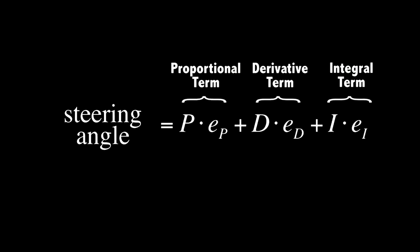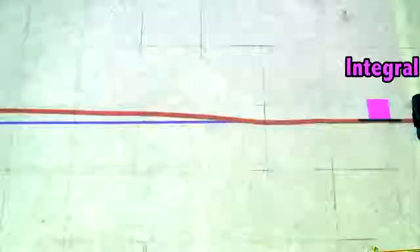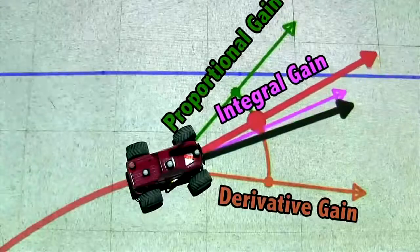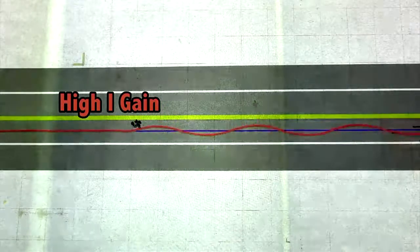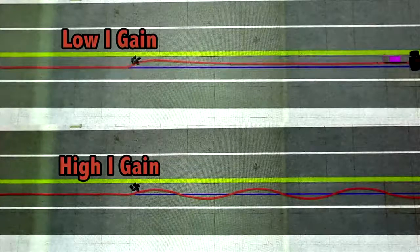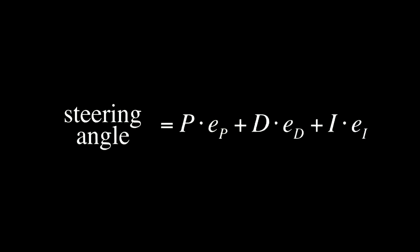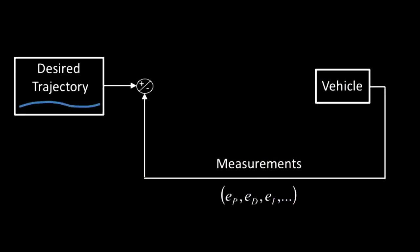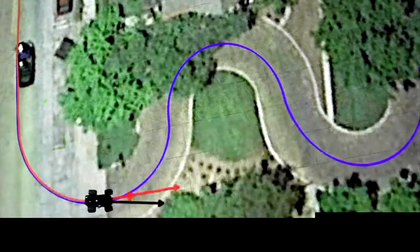One way to address this is to add an integral term. This third measurement sums up the cross-track error to indicate if we are spending more time on one side of the trajectory. The integral term is this sum multiplied by a gain. Three gains must now be tuned simultaneously. If the integral gain is too large, the controller can go unstable; if too small, it responds too slowly. When just right, the controller quickly corrects for misalignment. This combination of three terms is PID control.